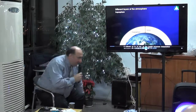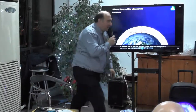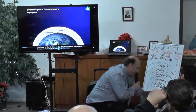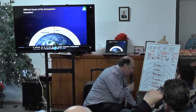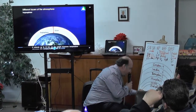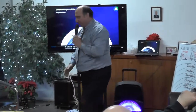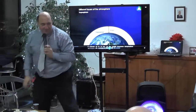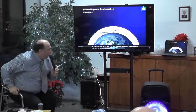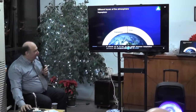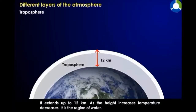The troposphere — we wrote it here and it's 12 km. We will write the first atmosphere. As the height increases, temperature decreases.